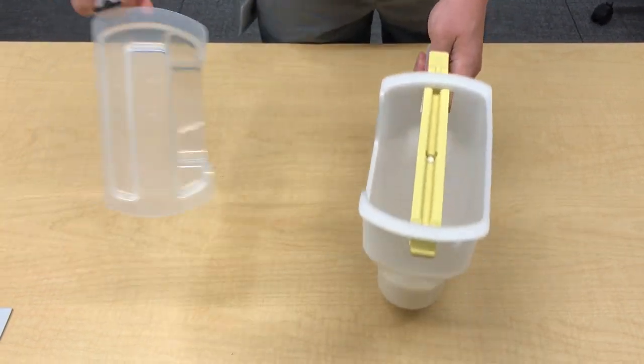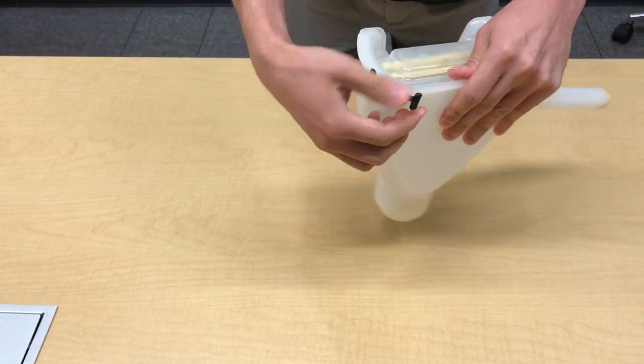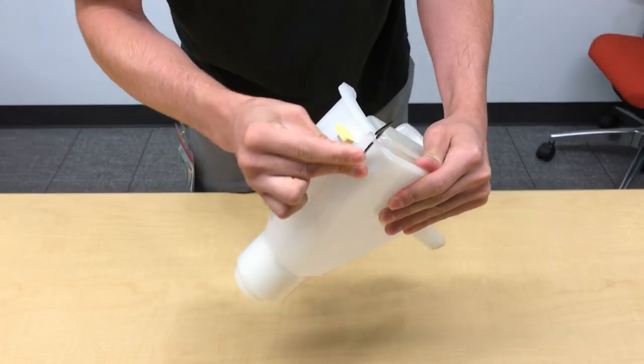After that, the tether and lid go on. Very simple. If you want to make sure the tether gets inside, you can fold the tether and push it into the hole.